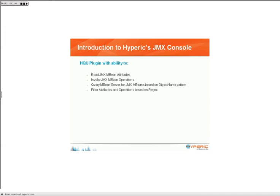To give you some validation of the JMX console: the JMX console is implemented as an HQ plugin and it provides the following capabilities. It allows you to read your application's JMX MBean attributes, invoke simple JMX MBean operations, and query the MBean server for your running JVM using the standard JMX object name pattern, so you can select only those MBeans you are most interested in. It also prevents UI clutter by filtering for only those attributes and operations you are interested in, based on Java regular expressions.